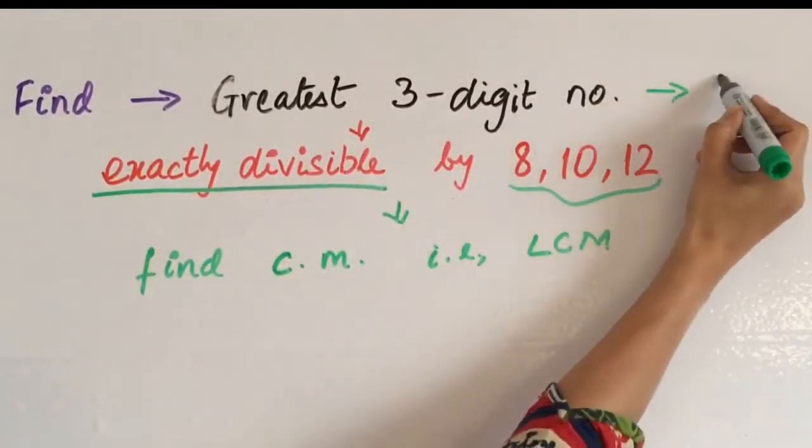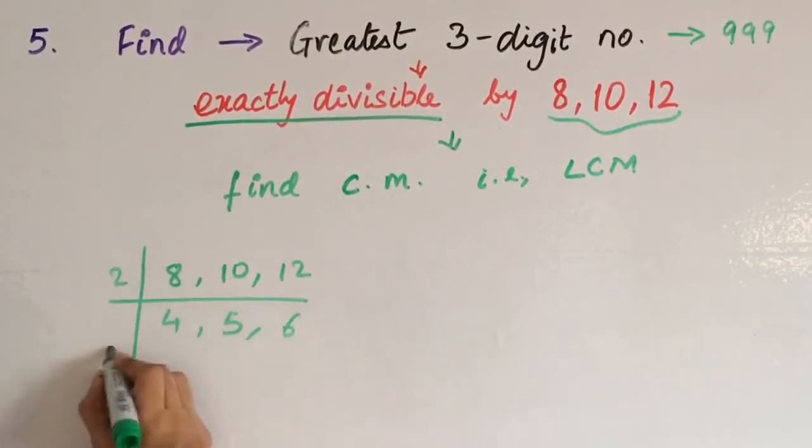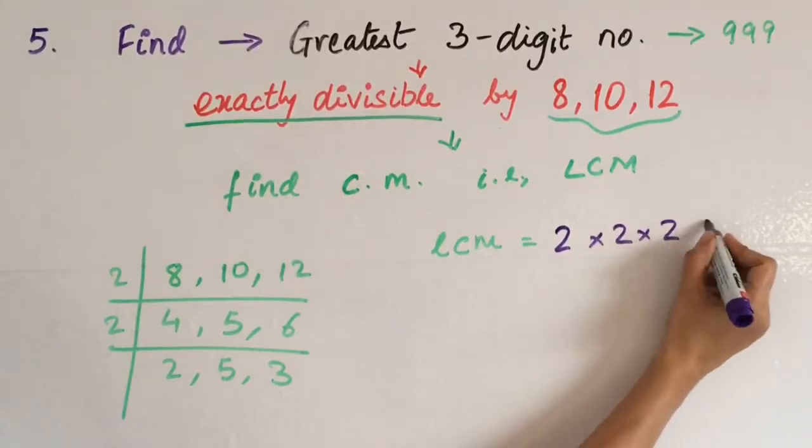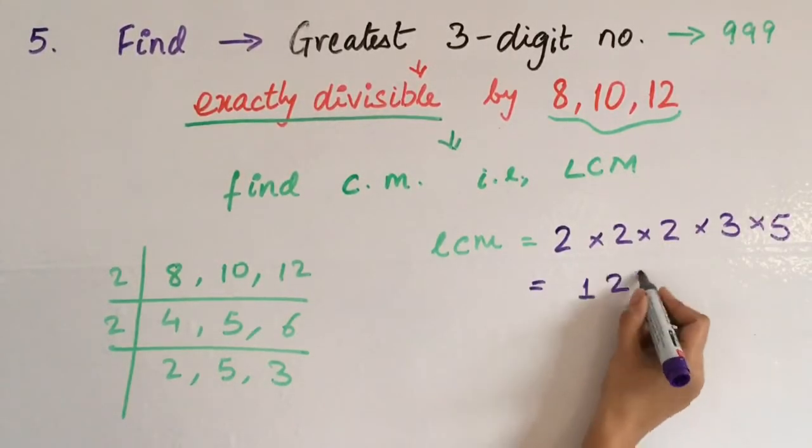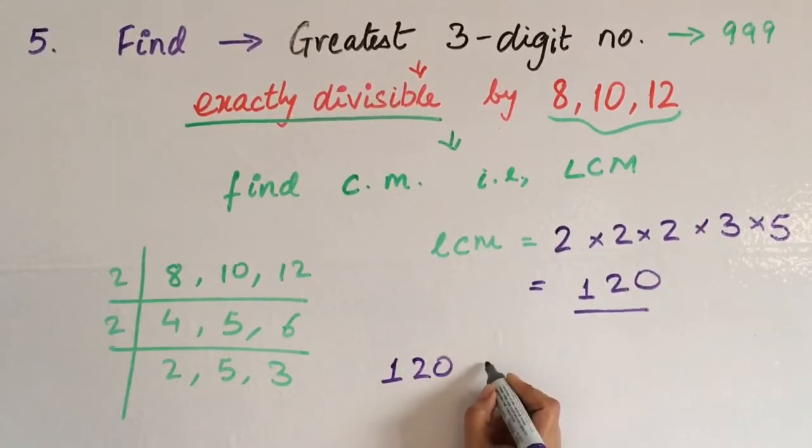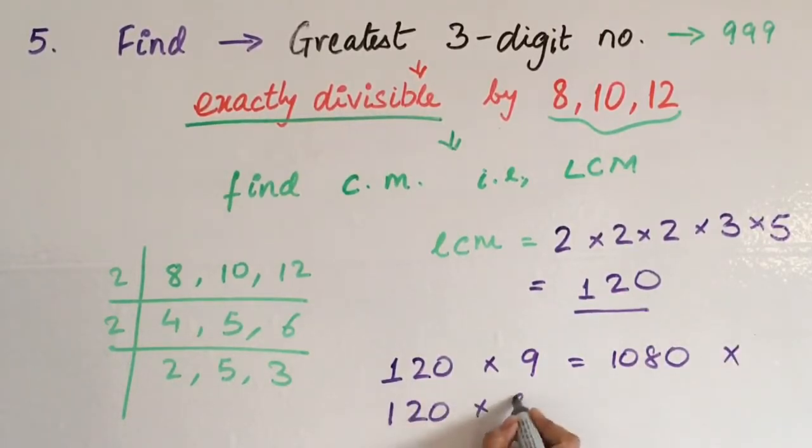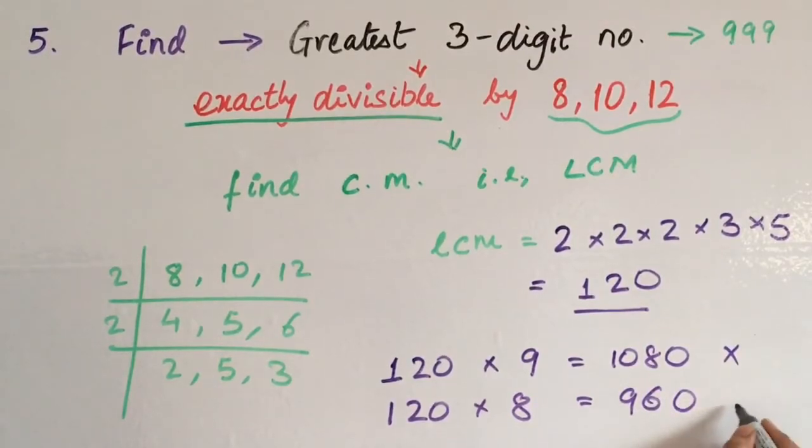Now the greatest 3-digit number is 999. Taking out the LCM of 8, 10 and 12, the value is coming out to be 120. Now 120 is not the greatest 3-digit number. We need a number which will be close to 999. If we multiply this number by 9, we need to find 999. Multiply by 8, what you get is 960. This is close to 999. It is the greatest 3-digit number which is exactly divided by 8, 10 and 12. Therefore, your answer is 960.